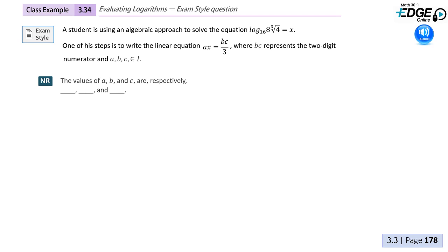The student will eventually arrive at a step that says a times x equals bc over 3, where b and c are not two distinct numbers or two factors, but rather bc represents a two-digit number.